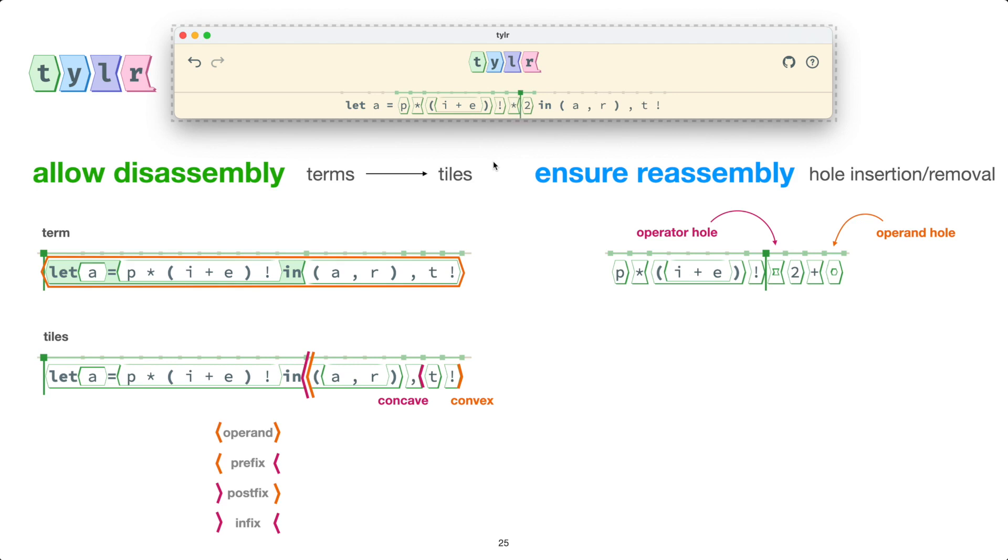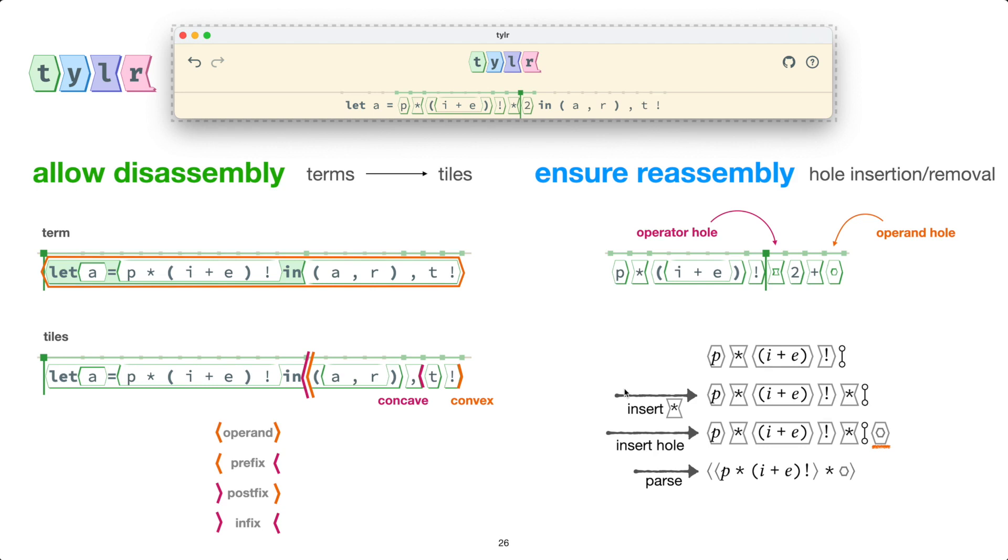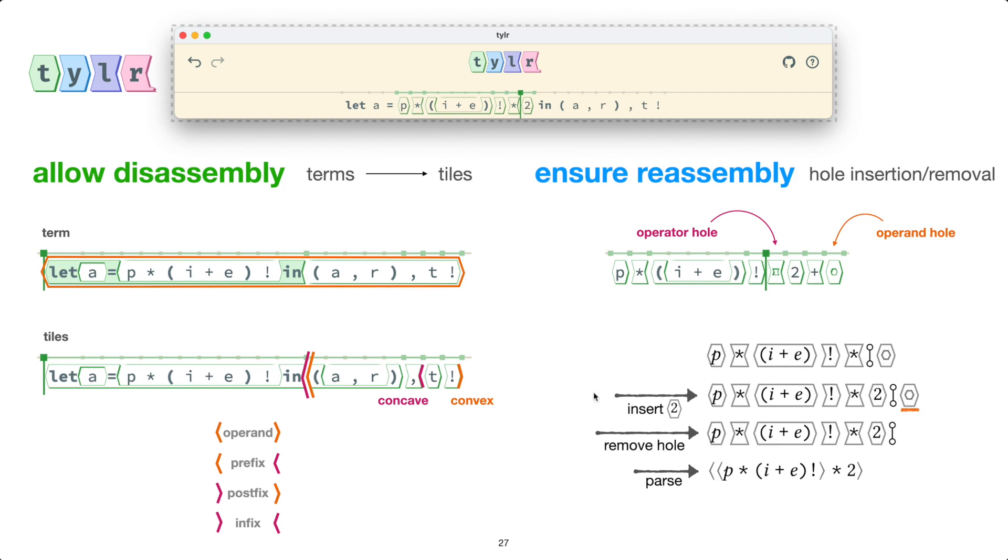Let's look a little bit more at the underlying details. So here was my original pi expression. I then typed times to insert the times binary operator. And this is just simple insertion into this linear sequence of tiles. Tyler then notices that the overall shape is no longer convex. So it inserts this operand hole to restore convexity. And this gives us a successful parse.